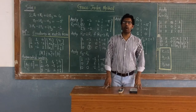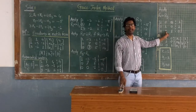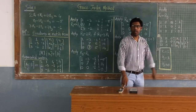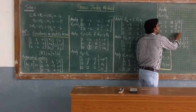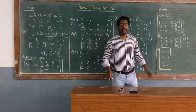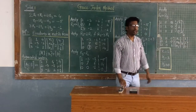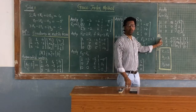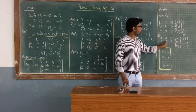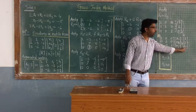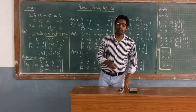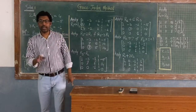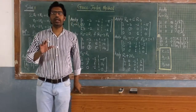Once matrix A is in normal form, write down the matrix equation AX = B separately. Converting this into equation form gives the values of the unknowns directly: X1 = 1, X2 = 2, and X3 = 0. This is how you solve a set of algebraic equations using the Gauss-Jordan method.